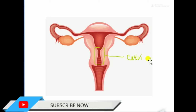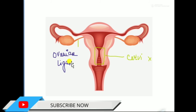There is another mesentery — a connection between the ovary and the uterine wall — which helps to suspend the ovary. This is known as the ovarian ligament. The ovarian ligament connects the ovary with the uterine wall.